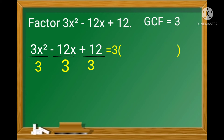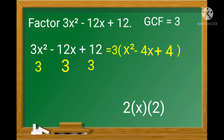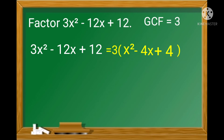Copy the given polynomial and write the GCMF of 3. Divide each term by 3: 3x² ÷ 3 = x², −12x ÷ 3 = −4x, and 12 ÷ 3 = 4. Check if the second factor x² − 4x + 4 is still factorable. It is a perfect square trinomial because the middle term 4x equals 2 × x × 2, the product of the square roots of x² and 4. So we apply PST.